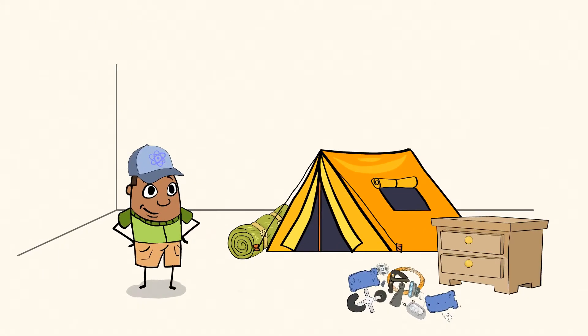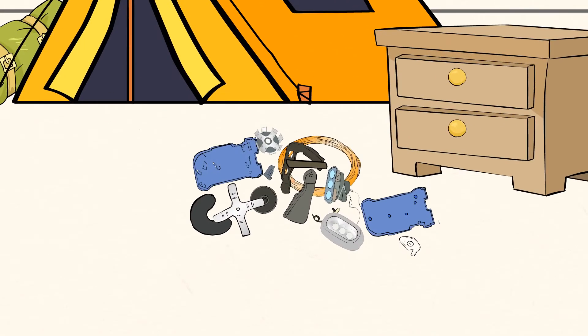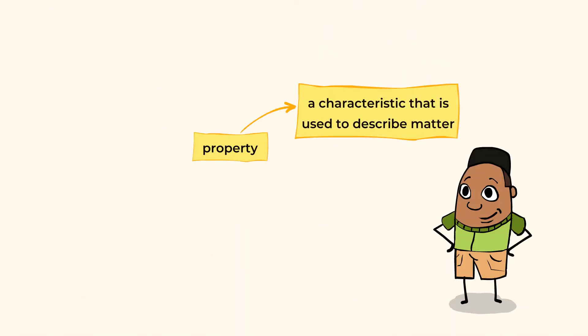And I think I can sort through the different pieces and identify their properties so I can figure out what each one is for and try to put it back together. A property is a characteristic that's used to describe matter.